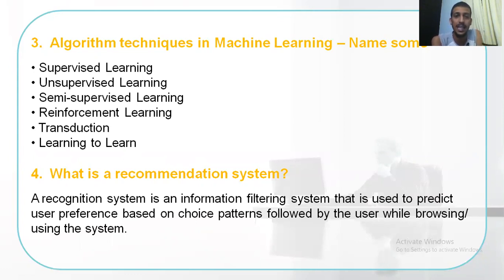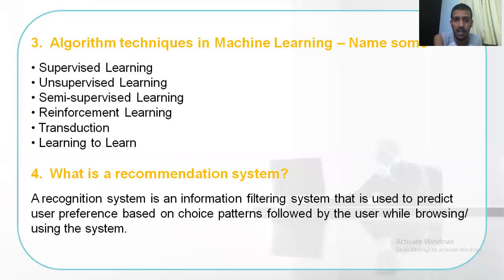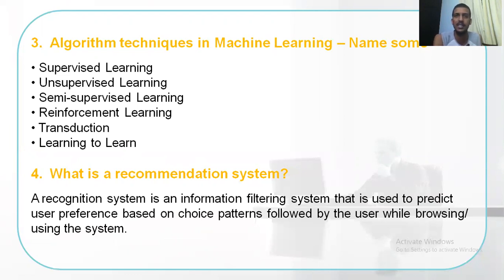The fourth one is: what is a recommendation system? This is something we all know. When you use an Amazon application for the first time, you make some choices, and when you go back the second time, you will have suggestions. That is because the system is predicting based on your preferences from previous transactions — it follows your choice patterns and gives you a recommendation accordingly so that you can make your choice faster and better.